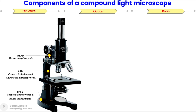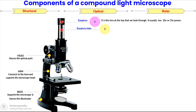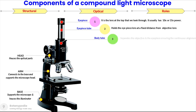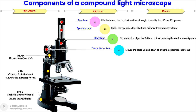Starting from the top of the optical parts, we have the eyepiece — the lens at the top that we look through, usually with 10x to 15x power. It is followed by the eyepiece tube, which holds the eyepiece lens at a fixed distance from the objective lens. Then we have the body tube, which separates the objective and the eyepiece for proper alignment. The coarse focus knob moves the stage up and down so the specimen comes into focus.